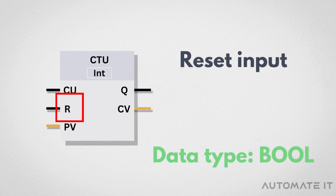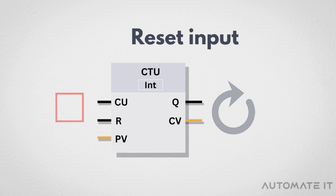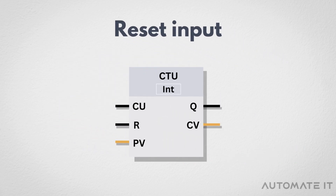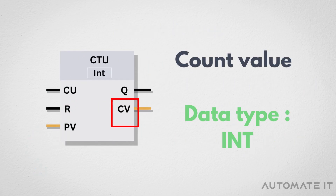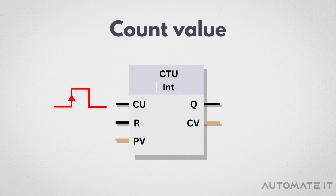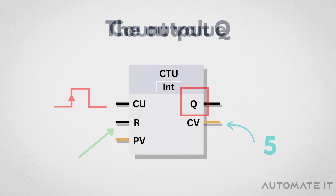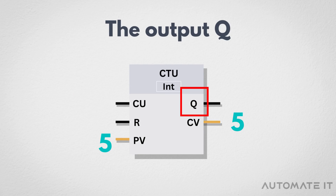R: this input resets the counter value back to 0. When this input receives a positive edge, the counter is reset. PV: this input represents the value for which output Q is set. CV: this output represents the current value of the counter. It indicates the number of times the CU input has received positive edges since the last reset. Q: this output is often used to trigger other functions or processes when a specific count value is reached.